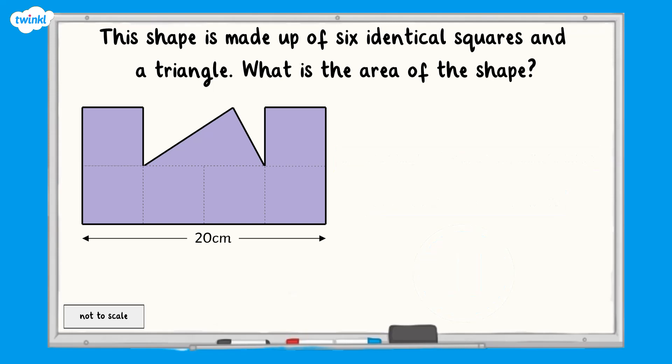Here is one way you could have worked out the answer. To start with, you could have divided the 20 cm by 4 to work out that each of the squares has a side length of 5 cm. This means that each of the squares has an area of 5 multiplied by 5, which is 25 cm squared.